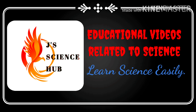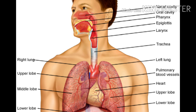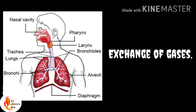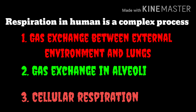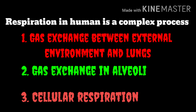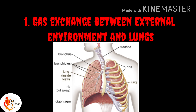Hello students, welcome to J Science Hub. Today we are going to study about the respiratory system. The primary function of the respiratory system is the exchange of gas. Respiration in humans is a complex process, so it takes place in three different stages: gas exchange between the external environment and lungs, gas exchange in alveoli, and cellular respiration.